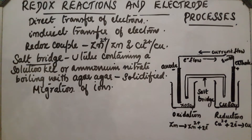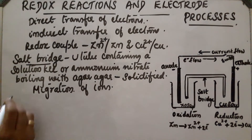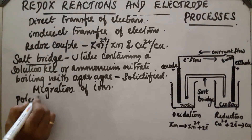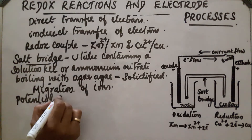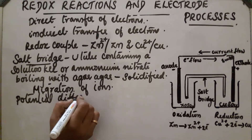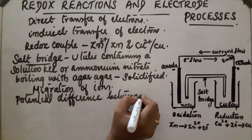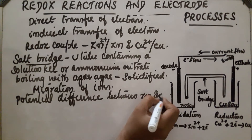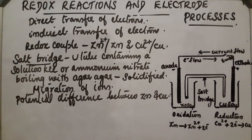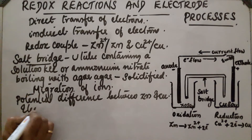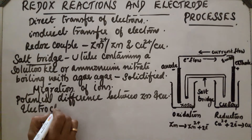The flow of current is due to the potential difference between zinc and copper. Current flows in the opposite direction to electron flow. This setup is called an electrochemical cell.